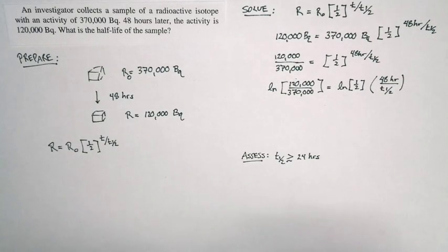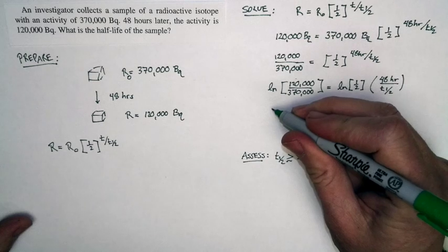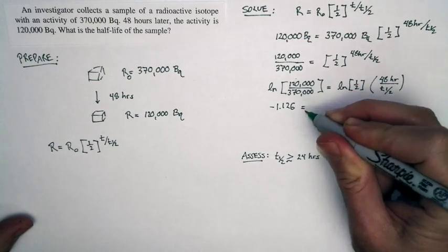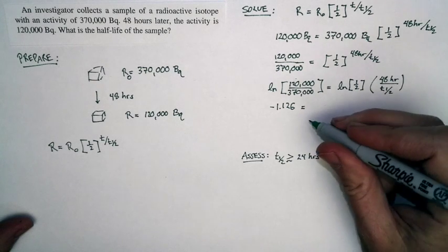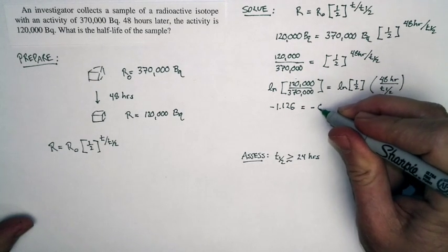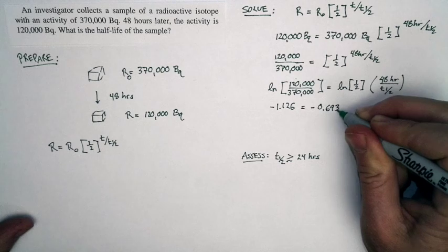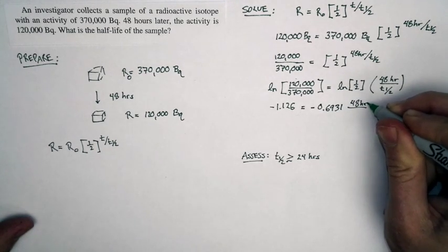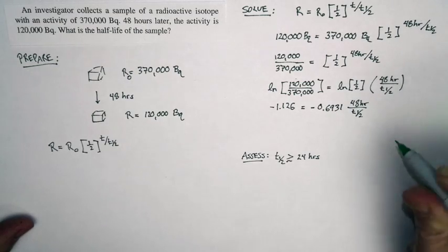Let's go ahead and compute these logarithms. This expression reduces to negative 1.126. And I'm keeping some extra decimal places for now. Natural logarithm of one-half is negative 0.6931. And then it's times 48 hours divided by t₁/₂.